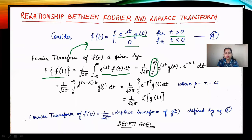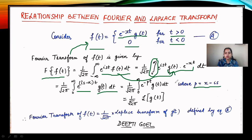For 0 to infinity, the function is now g(t) times e to the power minus xt. We have replaced f(t) by g(t) times e to the power minus xt. Clubbing the exponentials, we get e to the power iota s minus x times t, into g(t) dt. Now we assume that p equals x minus iota s, so we get 1 by root 2 pi, integral 0 to infinity, e to the power minus pt, times g(t) dt.